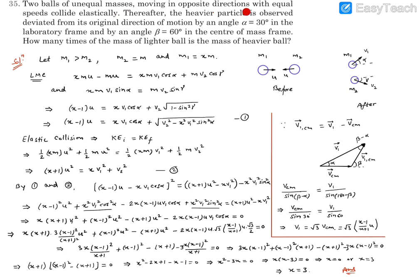This problem is about the collision of two unequal mass particles moving with the same speed in opposite directions. The collision is elastic — that's condition one. The deviation with respect to the laboratory frame of the heavier particle is given, and the deviation from the center of mass frame is also given. Let's consider m1 > m2, with m2 = m and m1 = xm, where x is the factor by which the heavier mass exceeds the lighter mass. We need to find x.